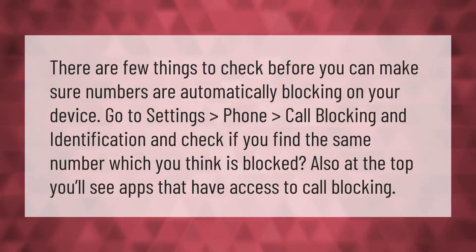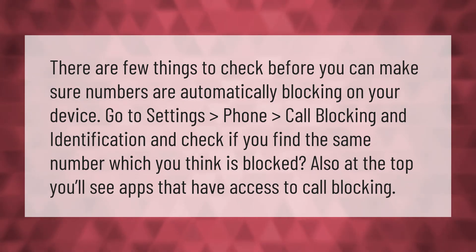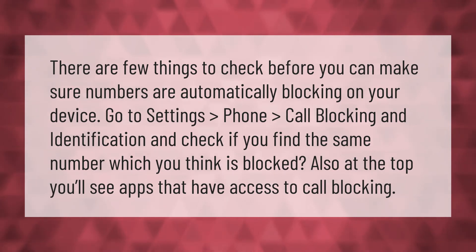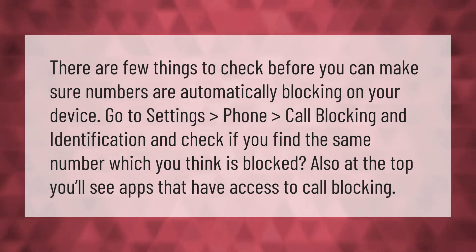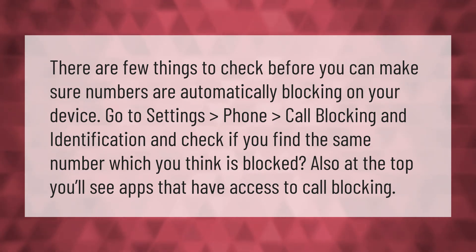There are a few things to check before you can make sure numbers are automatically blocked on your device. Go to Settings, then Phone, then Call Blocking and Identification, and check if you find the same number which you think is blocked. At the top, you'll see apps that have access to call blocking.